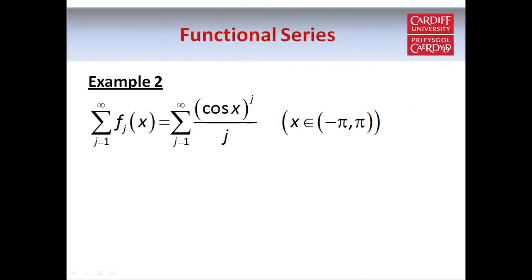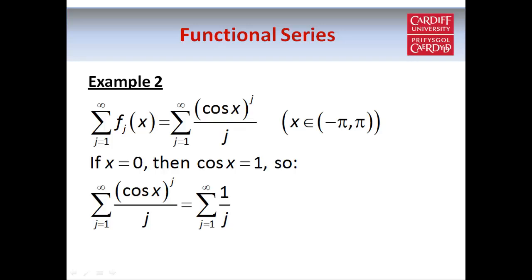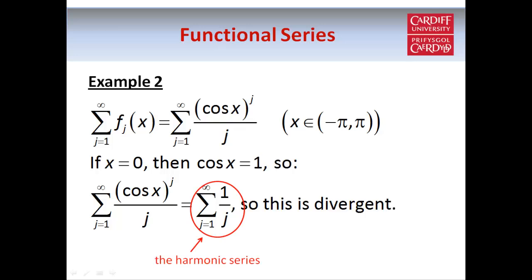Another typical example is where you have something trigonometric. In this case the terms in our series are given by cos x to the power j over j, where x is strictly between minus pi and pi. The fact that the terms have a denominator of j suggests something involving the harmonic series. If cos x equals one, that happens when x equals zero, and so when x equals zero our series is just the harmonic series, which we know is divergent. So we don't have any kind of convergence here either.